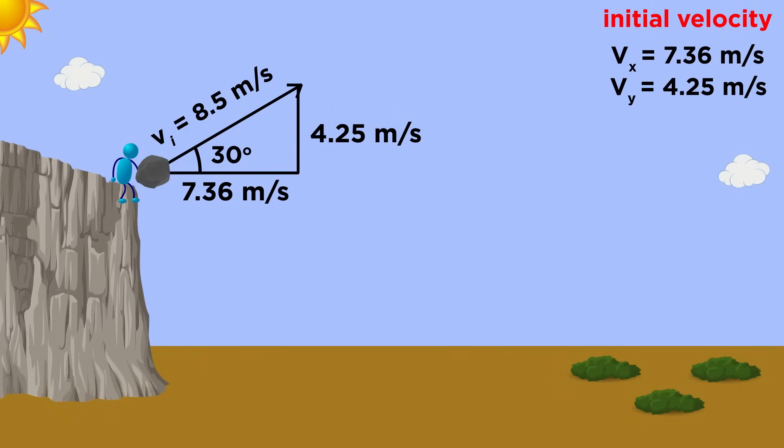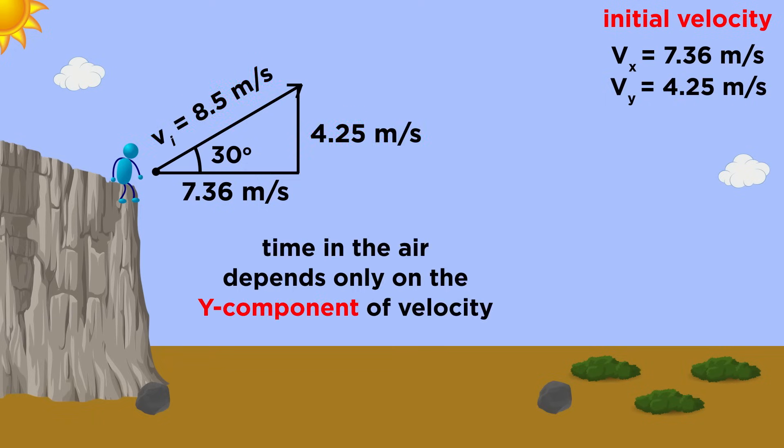These velocities are independent of one another, meaning that a rock that was thrown straight up with an initial velocity of 4.25 meters per second will land on the ground at precisely the same time as the one thrown at 8.5 meters per second, but at this 30 degree angle. That means that if we want to figure out how long it is in the air, this is no different than a problem with one-dimensional vertical motion, provided that we understand that we are only looking at the y component of this velocity vector.